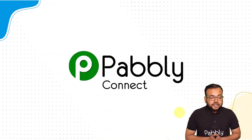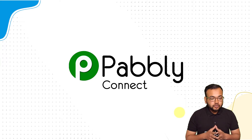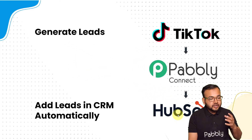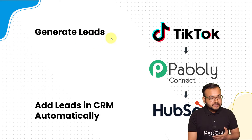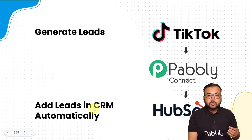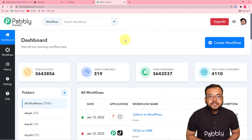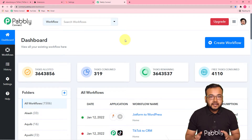To set up this automation, we are using Pabbly Connect, which is an integration and automation tool. With the help of this, we are going to create this automation, and the flow will look like this: as and when you generate a lead from TikTok ads, the same lead will be added into your CRM automatically. So let's start setting up this automation together. The first step is to log in to your Pabbly Connect account and reach the dashboard.